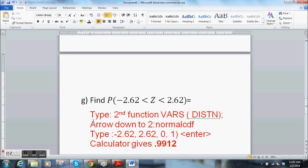On the calculator, we already have a lower bound and an upper bound, so this one's easier in a way. Type second function variables. Arrow down to normal CDF. Type in the lower bound, minus 2.62. Make sure you put the minus in there. Upper bound, 2.62. 0, that's the mean. 1, standard deviation. Hit enter. Your calculator gives you 0.9912. So once you get in the roll of this, it's pretty straightforward.